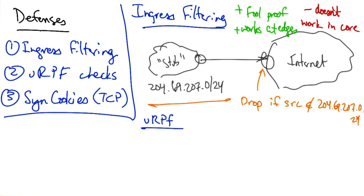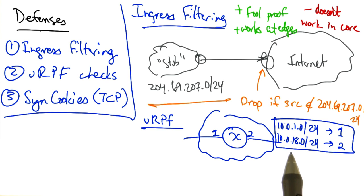So the solution that operators try to use in the core is to use the routing tables to determine whether a packet could feasibly arrive on a particular incoming interface. So if a router had a routing table that said all packets for 10.0.1.0/24 should be sent via interface 1, and all packets destined for 10.0.18.0/24 should be sent via interface 2, then URPF says if we see a packet with a particular source IP address on an incoming interface that is different than where we would have sent the packet in the reverse direction, then we should go ahead and drop this packet.